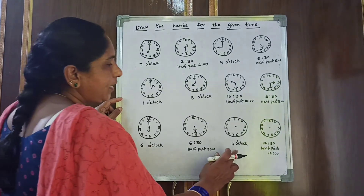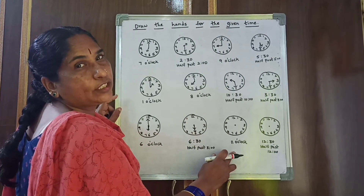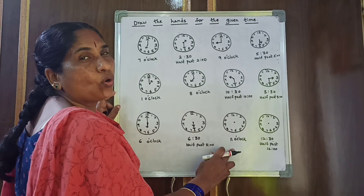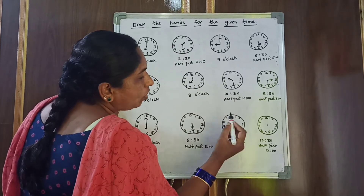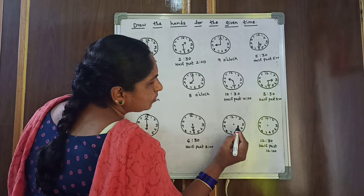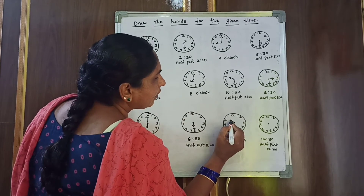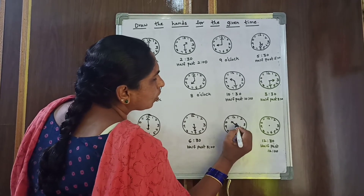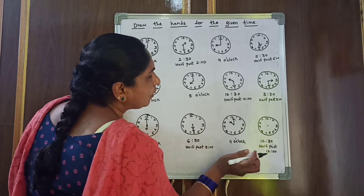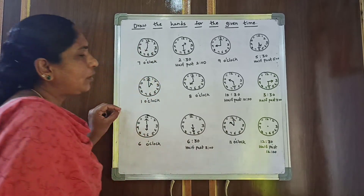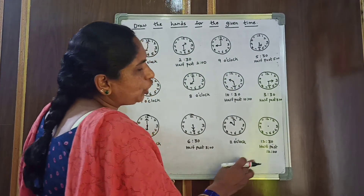Next: 11 o'clock. 11 is the hour hand — short hand. O'clock is the long hand, and you have to draw the long hand on 12. So short hand to 11 and long hand to 12 for 11 o'clock.